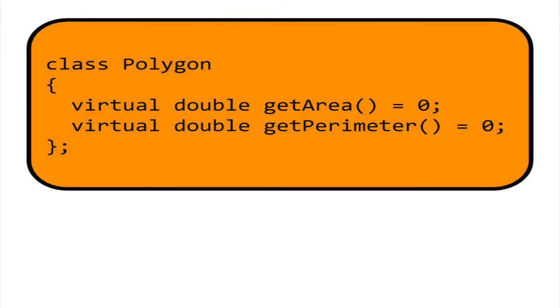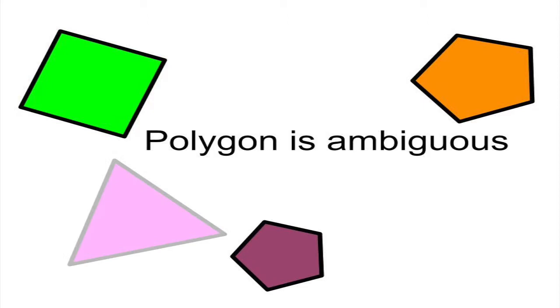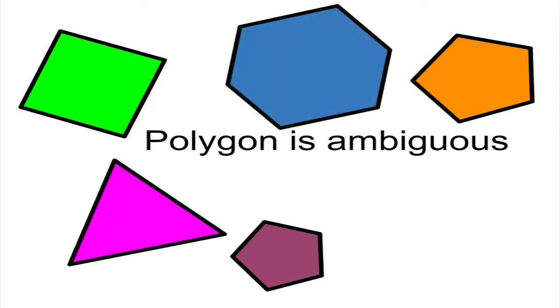Let's give the polygon class two virtual functions, getArea and getPerimeter. Note that we cannot determine the area or perimeter of a generic polygon since we don't know anything about its specific dimensions.